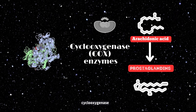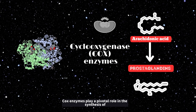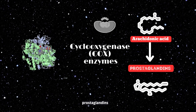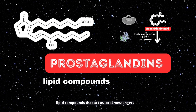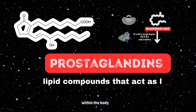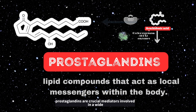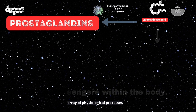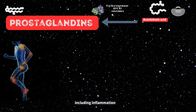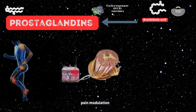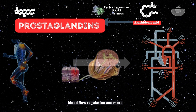Functions of COX enzymes: cyclooxygenase COX enzymes play a pivotal role in the synthesis of prostaglandins, lipid compounds that act as local messengers within the body. Prostaglandins are crucial mediators involved in a wide array of physiological processes, including inflammation, pain modulation, blood flow regulation, and more.